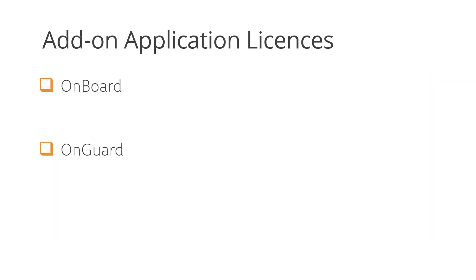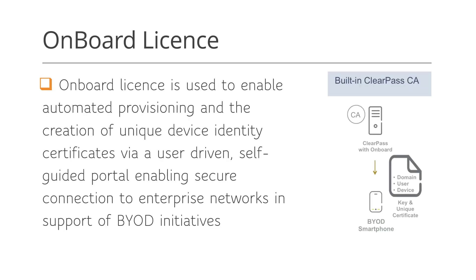There are two types of add-on appliance licenses: OnBoard and OnGuard. Both of these are optional and are used to extend the functionality of your ClearPass deployment. The OnBoard license is used to enable automated provisioning and the creation of unique device identity certificates via a user-driven, self-guided portal, enabling secure connection to enterprise networks in support of BYOD initiatives. Please note that ClearPass OnBoard does not replace your PKI infrastructure, but rather extends it.